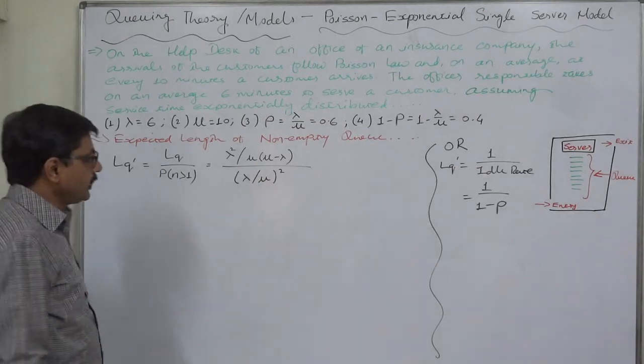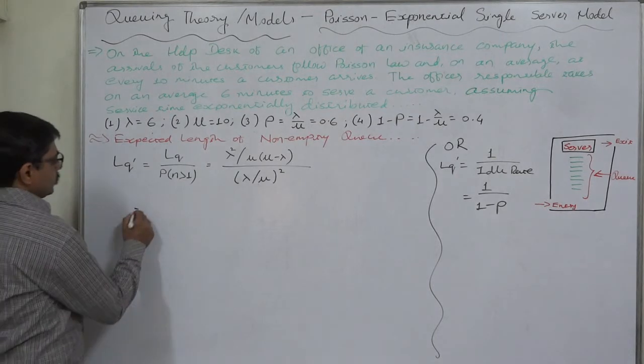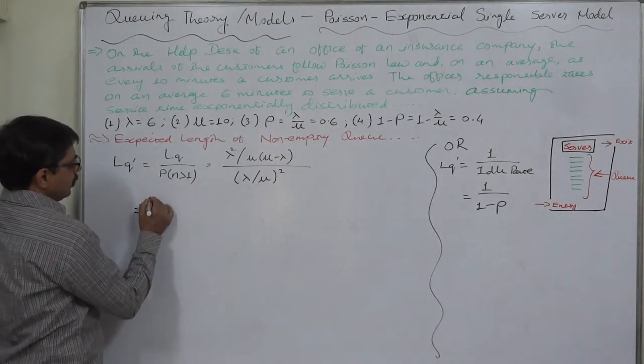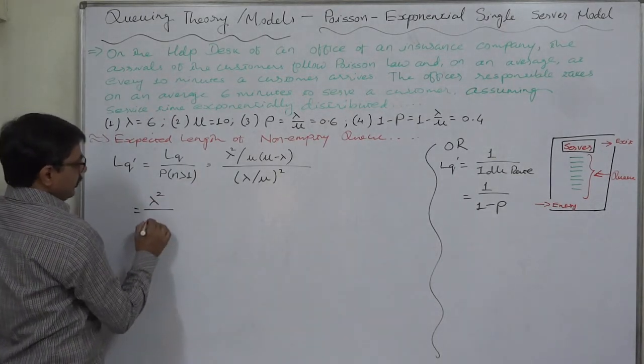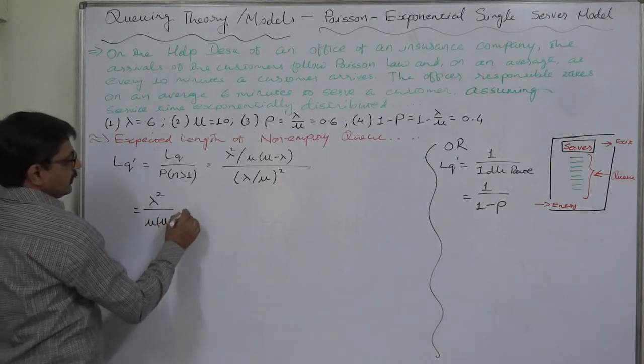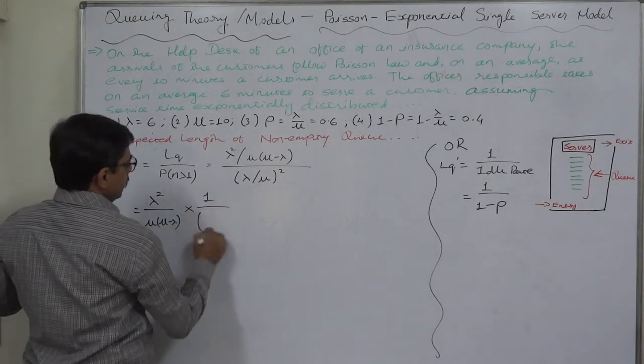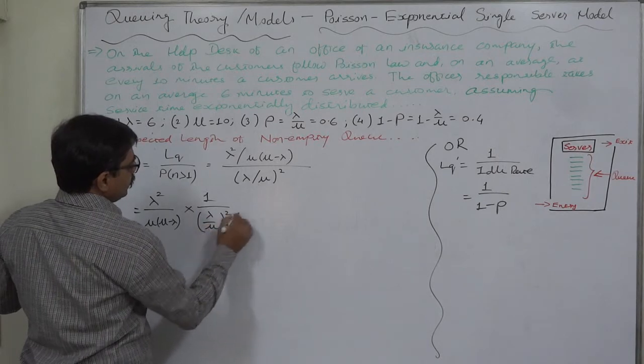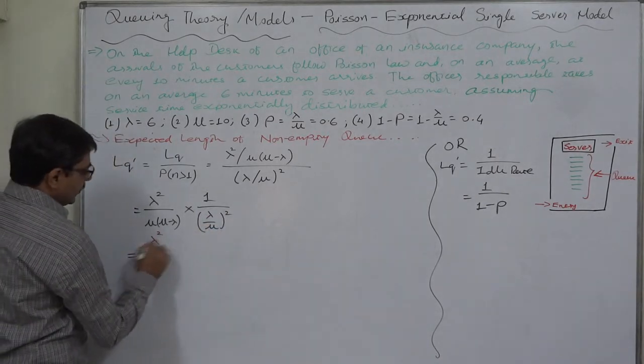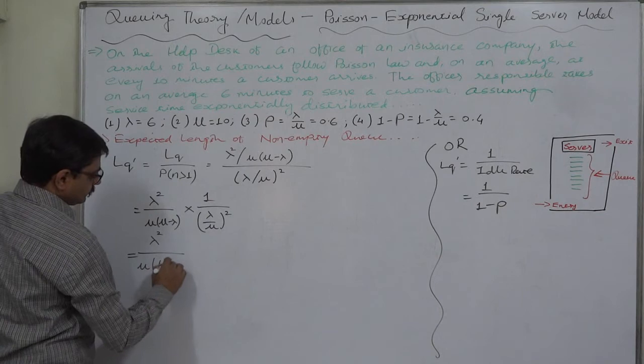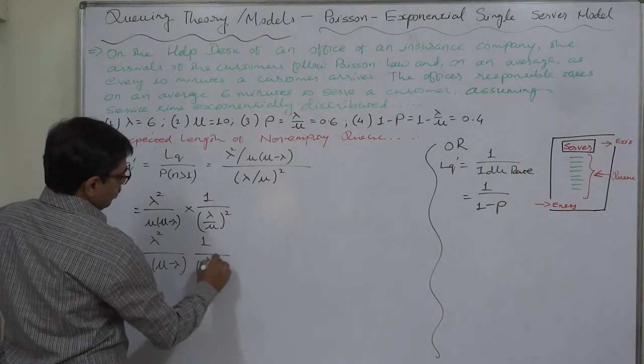So it will be lambda squared upon mu into mu minus lambda, into 1 upon lambda by mu whole squared. Something like this will be there: 1 upon lambda squared upon mu squared.